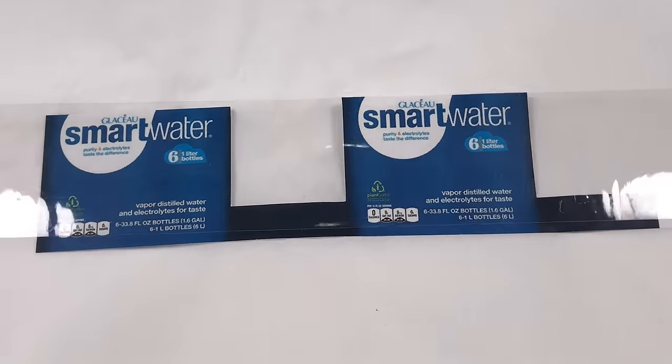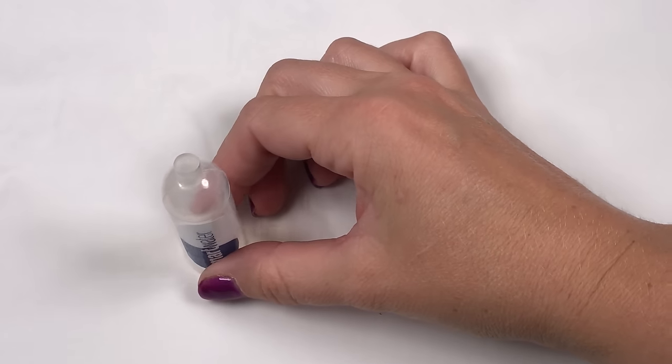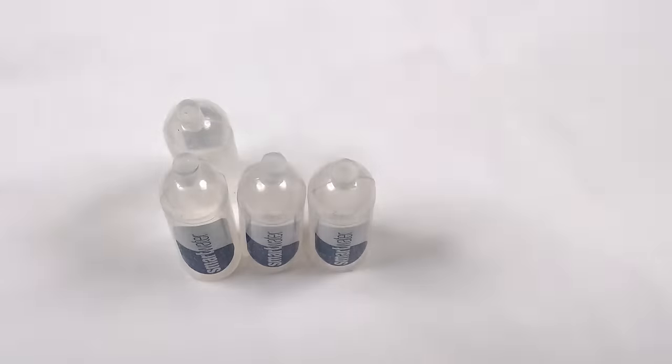Now cover the package label with the clear tape, place six water bottles together, and wrap the label around the water bottles.